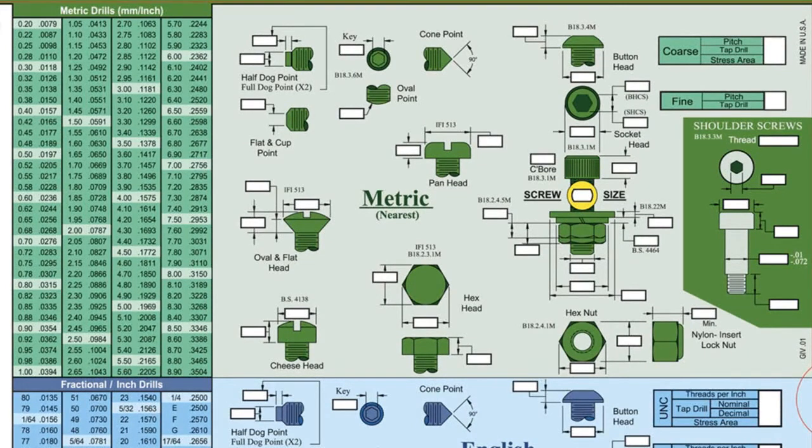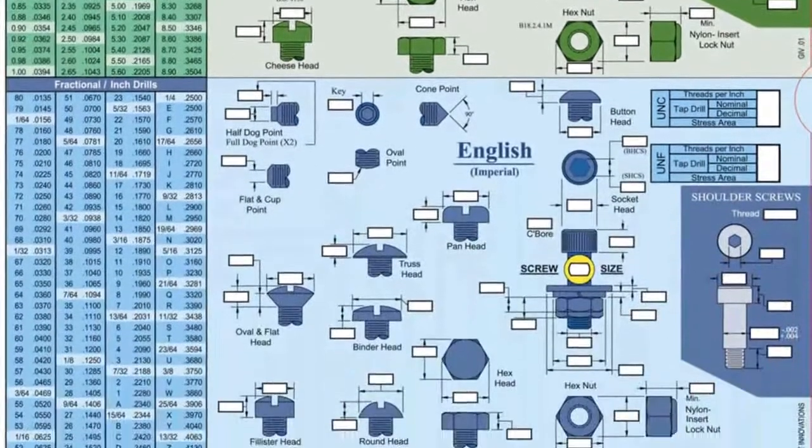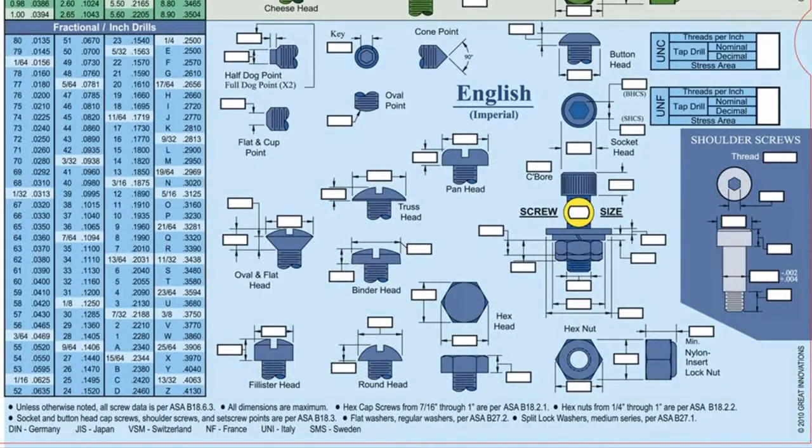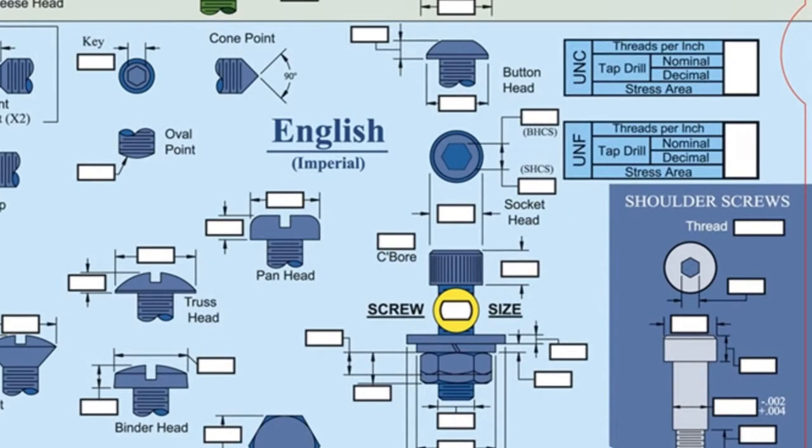Imperial fasteners ranging in size from number 0 to 1 inch are highlighted in blue at the bottom. Tables containing drill, tap, and stress areas for both fine and coarse threads are located in the upper right corner of each section.